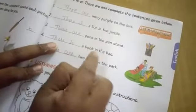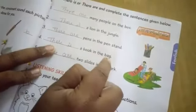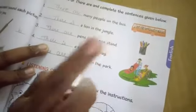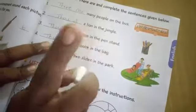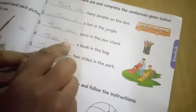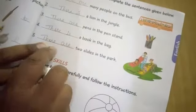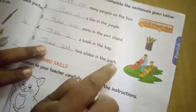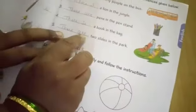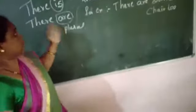Fourth: dash — a book in the bag. There is a book in the bag — singular, so 'there is.' Fifth: dash — two slides in the park. Two slides, so we use 'there are.' Now you know where to use 'there is' and where to use 'there are.'